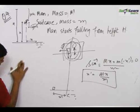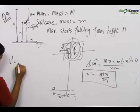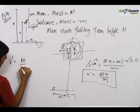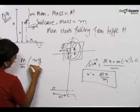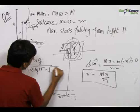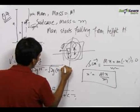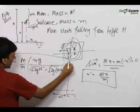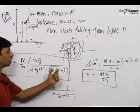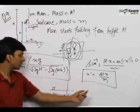The final answers are: the minimum velocity to be imparted to the bag is (M/m) × xg / (root over 2gH minus root over 2g(H minus h)), and the distance from the line of fall where the bag lands is Mx/m.